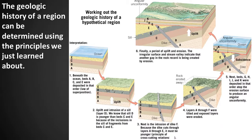What are the principles we just reviewed? That's right — the principles are superposition, cross-cutting relations, original horizontality, lateral continuity, and three different types of unconformities: angular unconformity, disconformity, and nonconformity. Based on these principles, we can interpret the geologic history of a region. You are now an expert in these relative age principles, so we will now discuss absolute age principles.